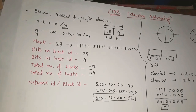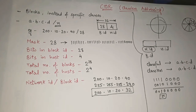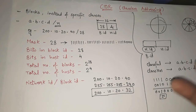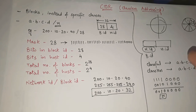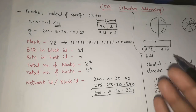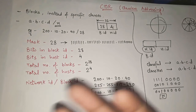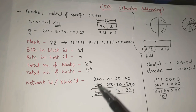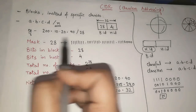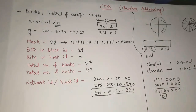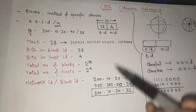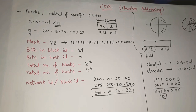In classless addressing, the network is not divided into classes — it is simply divided into blocks, and the size of the blocks will always be 2 raised to something. Whenever any IP address is given, you can find the mask, block ID bits, host ID bits, total blocks, total hosts, and especially the network ID. I hope you have understood the whole concept of masking, CIDR, and the differences between classful and classless addressing. If you still have any doubt, you can always ask in the comment section. Thank you so much.